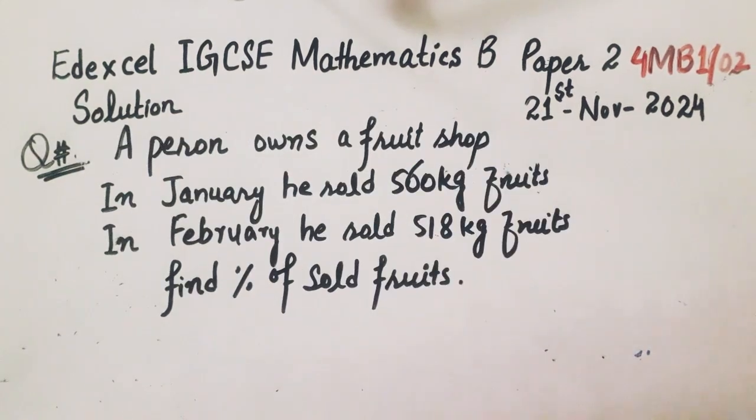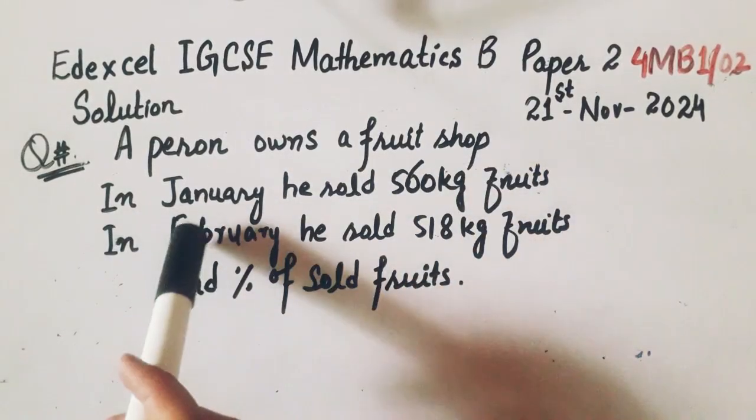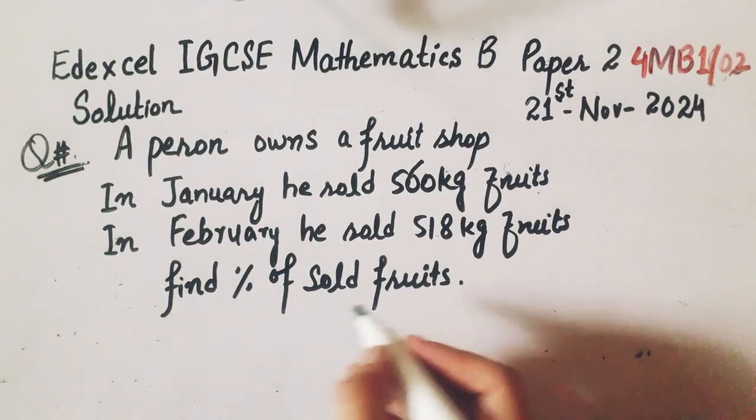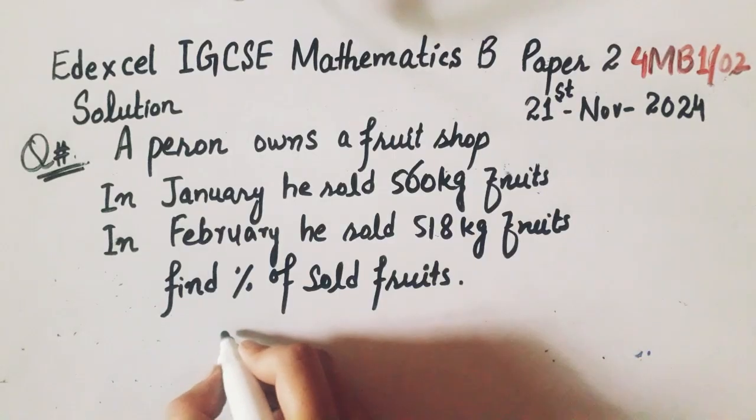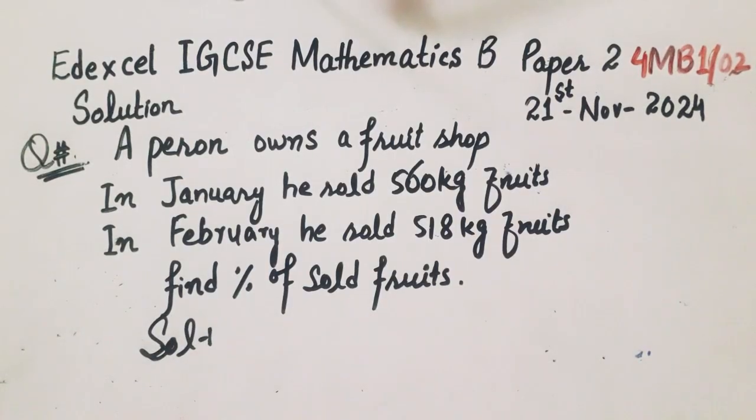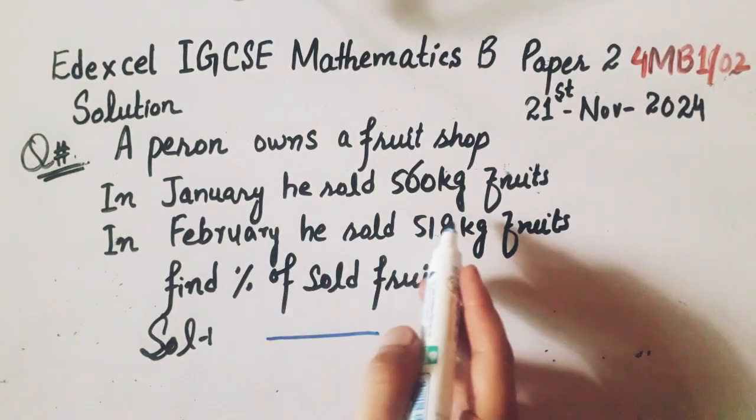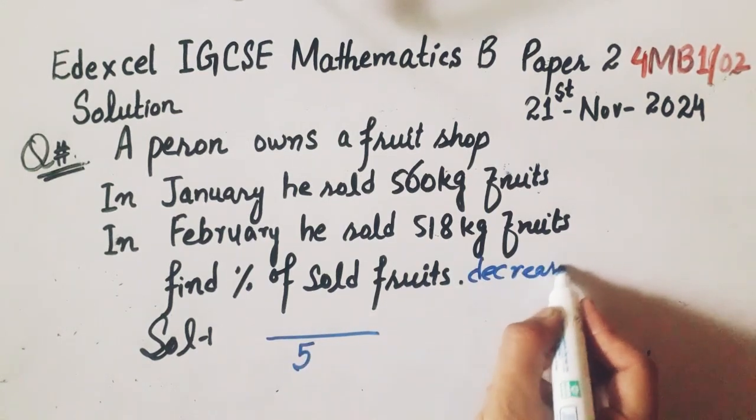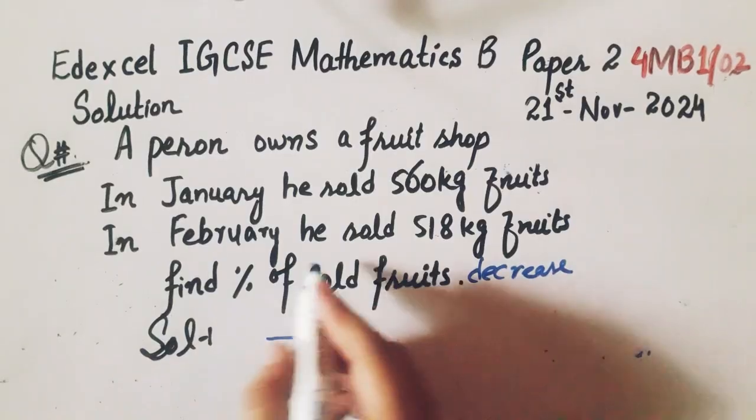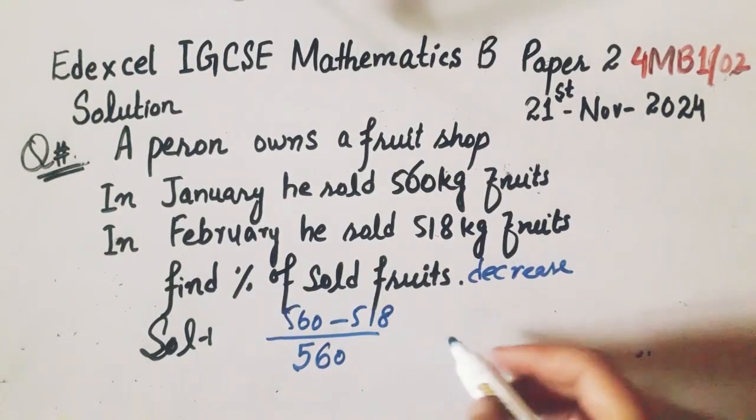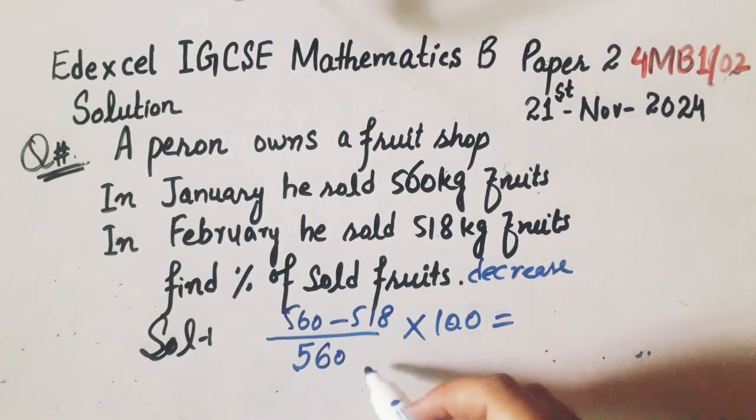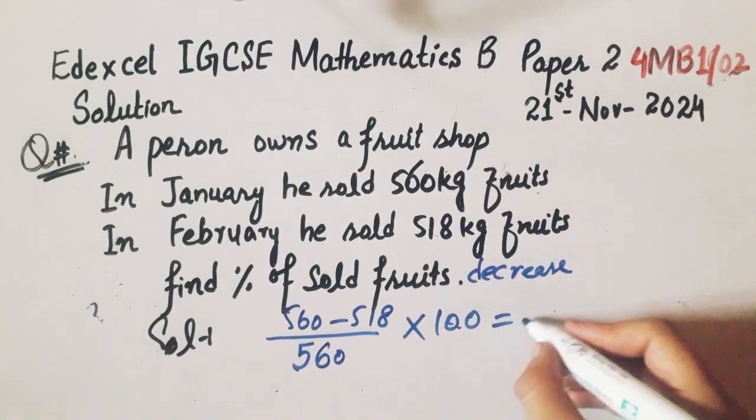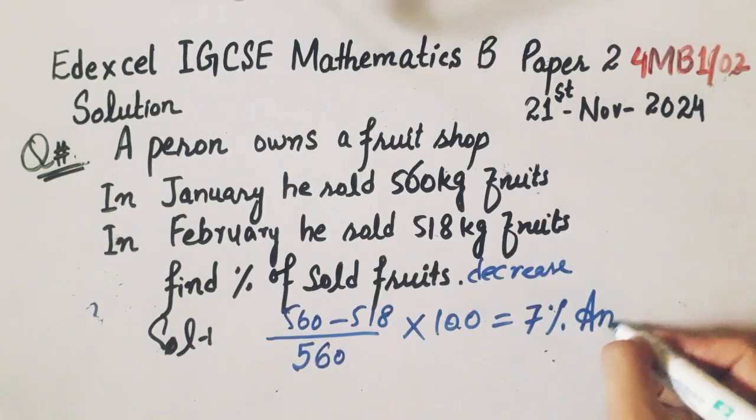Now we will solve the next question. The next question is a person owns a fruit shop. In January he sold 560 kg fruits. In February he sold 518 kg fruits. Find the percentage of the sold fruits decrease. First of all total is 560. You have to find the decrease percentage. So 560 minus 518 divided by 560 and multiply this by 100. So this will be equal to 7.5%. So this will be the answer.